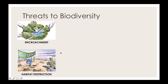Habitat destruction is similar but different. Encroachment focuses more on expanding human areas and taking space from wildlife, whereas habitat destruction focuses on using the resources in a given area — think logging or the oil industry, and different pollutants that affect plant growth. It's taking resources for human use and destroying the habitat in the process. Oil spills and cutting down the rainforest are good examples of taking an ecosystem and using it for human purposes instead of leaving that habitat for the animals that need it.